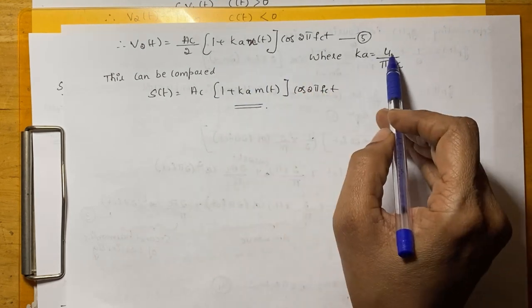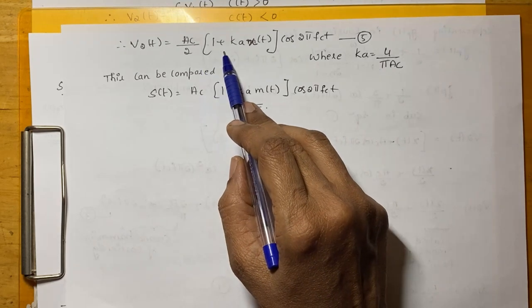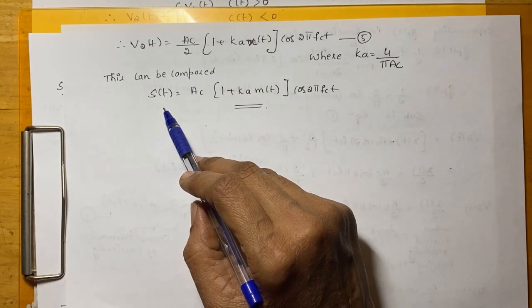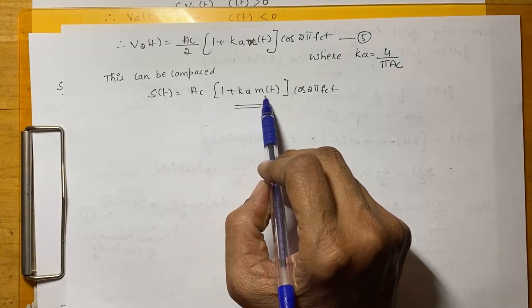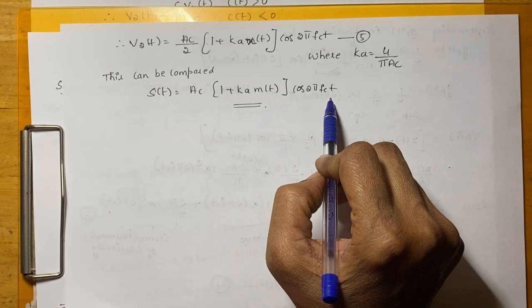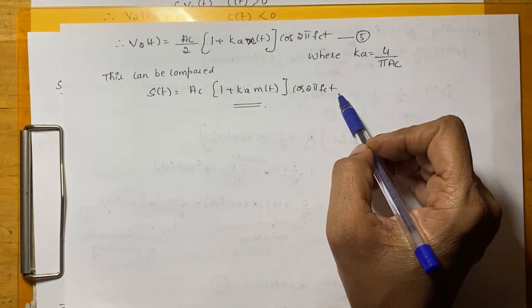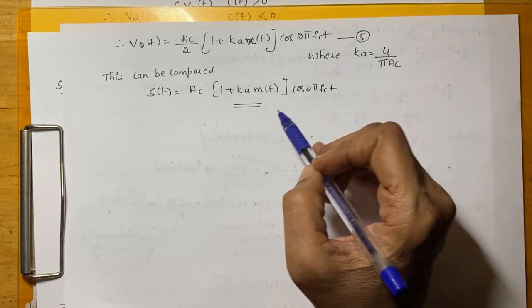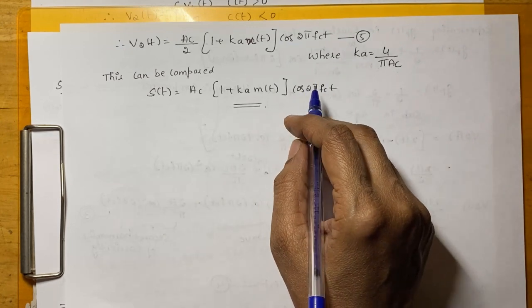This equation V2(t) can be compared with the standard AM equation that is S(t) = AC[1 + KA M(t)] cos(2π FcT). Now, we can observe that this equation 5 and the standard equations are same. Therefore, this is an efficient way of generating an AM signal. Thank you.